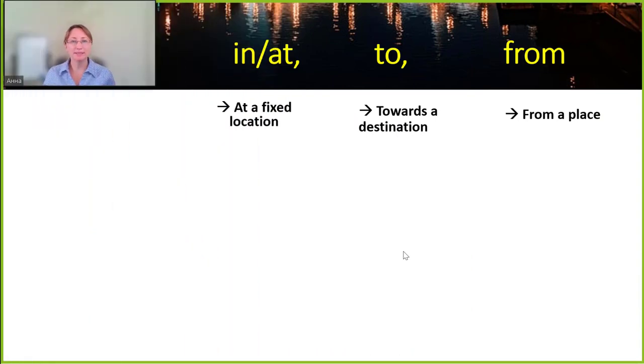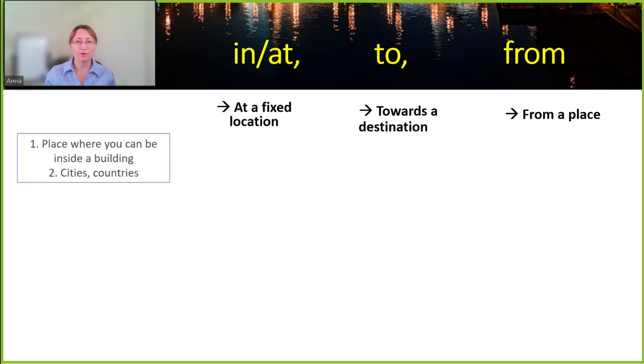Now when we say in or at in English, we mean that we are in or at a fixed location. In Russian you also have to keep a couple of different categories in mind. For instance, is this fixed location somewhere where you can be inside some kind of building, or is it a city or a country? If that's the context, then in Russian we will be using the preposition В with this specific location and the location will be in the prepositional case.